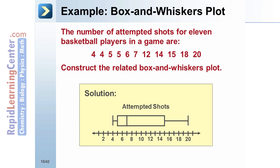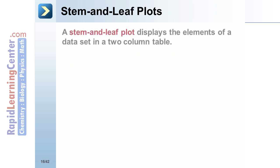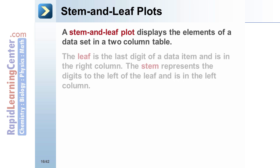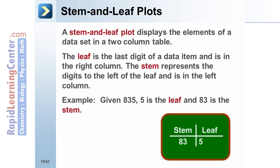Stem and leaf plots: a stem and leaf plot displays the elements of a data set in a two-column table. The leaf is the last digit of a data item and is in the right column. The stem represents the digits to the left of the leaf and is in the left column. For example, given 835, 5 is the leaf and 83 is the stem. Separate the stem and the leaf with a vertical line.